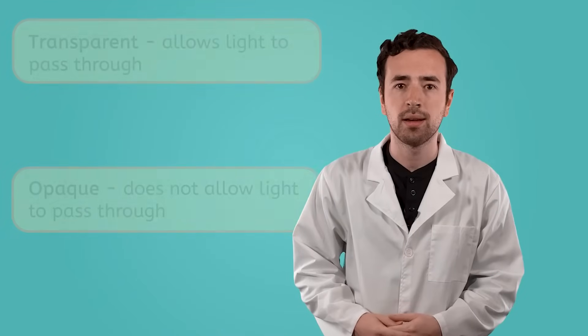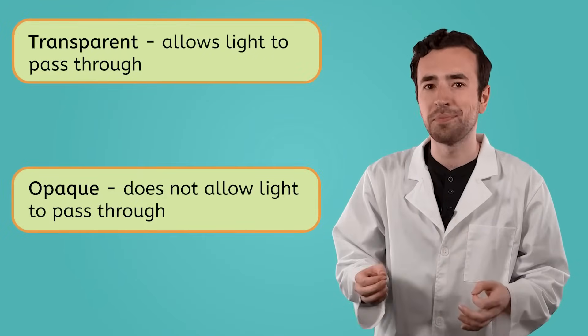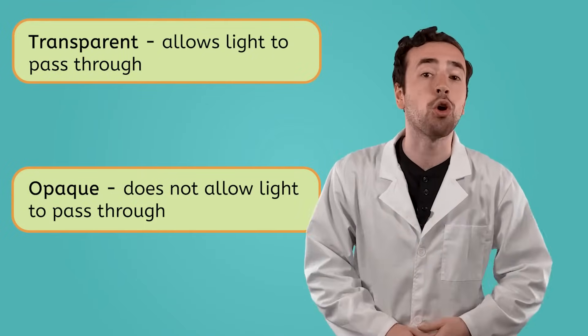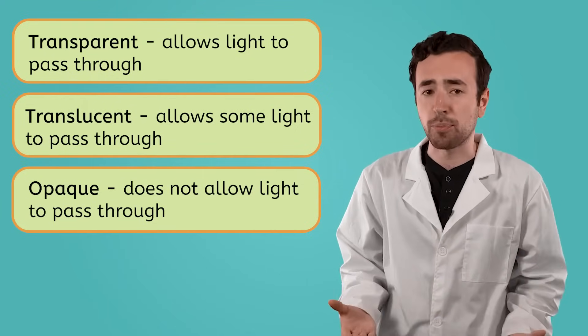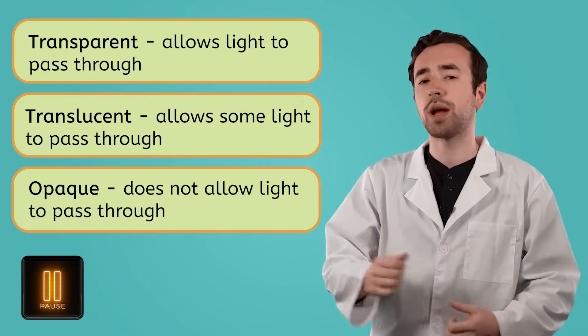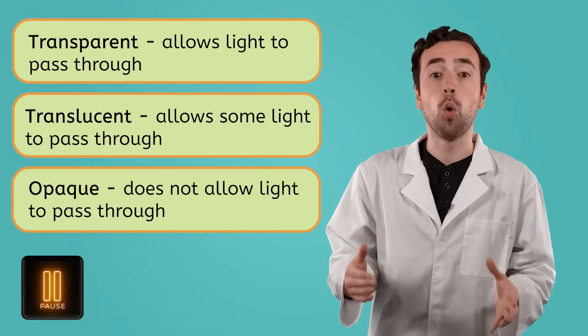So, are all objects either transparent or opaque? Well, think about sunglasses, which protect your eyes from the sun, but you can still see through them. Or what about stained glass windows, which let in beautiful colored light, but aren't too helpful for seeing outside? When objects let some, but not all light through, then they're called translucent. So, depending on the properties of the matter, objects can be transparent, translucent, or opaque.